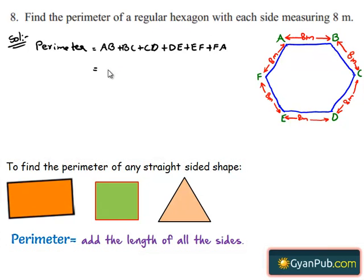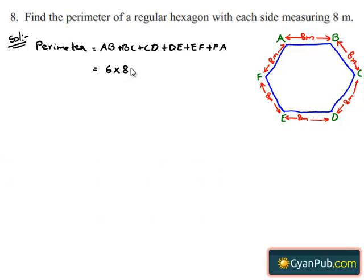Here each side is measuring 8 meters and number of sides are 6. So we can write the perimeter as 6 times 8 meters. This is equal to 6 times 8 gives 48 meters.